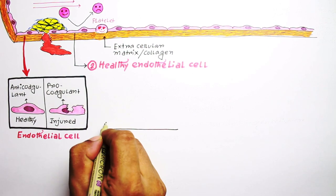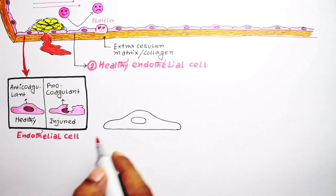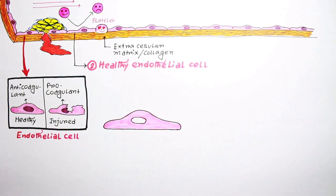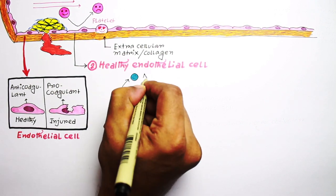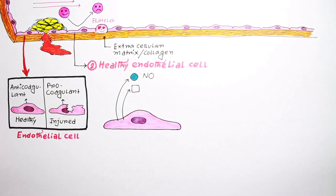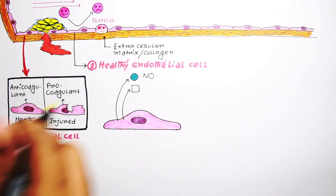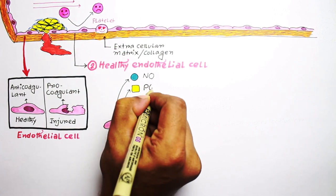Healthy endothelial cells are biologically active. They secrete many products in general circulation. Among them, we are going to discuss some products which have anticoagulant property. Healthy endothelial cells produce nitric oxide (NO) and PGI2, which is also called prostacyclin, and adenosine diphosphatase.